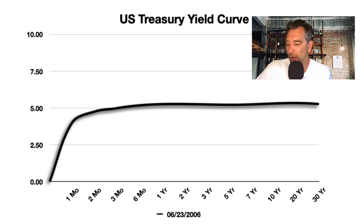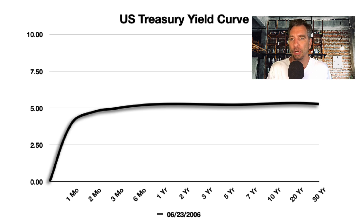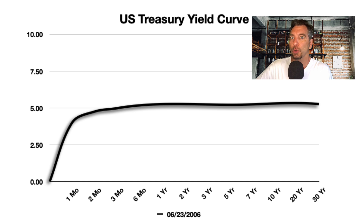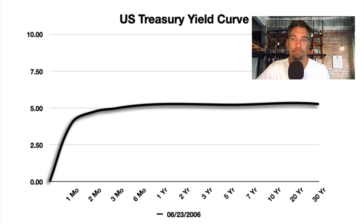The last normalized yield curve we had was June 23rd, 2006. We were getting close again in 2018–2019 but not nearly as high as 2006. Some yield curves have gone up close to six or seven percent, but nonetheless that 2006 curve is the benchmark here.